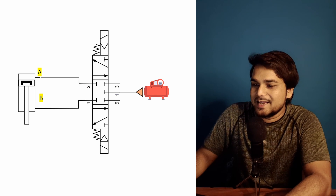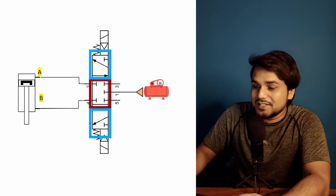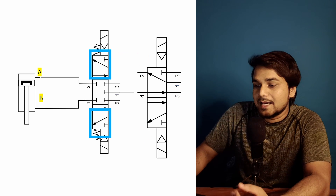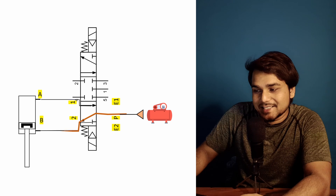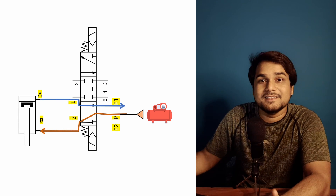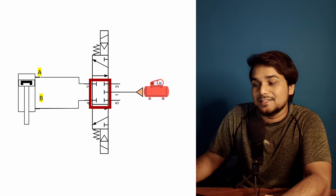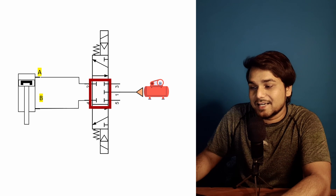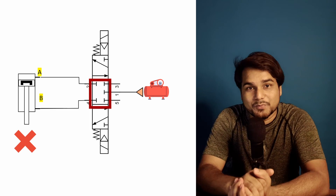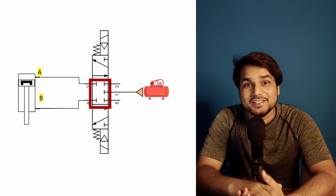The 5/3 center closed valve also has 5 ports and the same connection method, but has 3 position states. The two outer position states operate the pneumatic cylinder up and down exactly as the 5/2 valve does. The middle position state closes the compressed air supply and also closes the pneumatic cylinder connection ports, so the cylinder stops and won't move. By default the 5/3 center closed valve sits in the center closed position state.